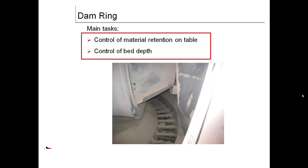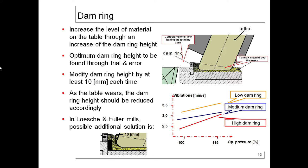Dam ring modifications: the dam ring's main task is control of material retention on table and control of bed depth. Increase the level of material on the table through an increase of the dam ring height. Optimum dam ring height to be found through trial and error. Modify dam ring height by at least 10mm each time. As the table wears, the dam ring height should be reduced accordingly. In Loesche and Fuller mills, possible additional solution controls material flow leaving the grinding zone. You can see low, medium, and high dam ring configurations with vibrations versus pressure.